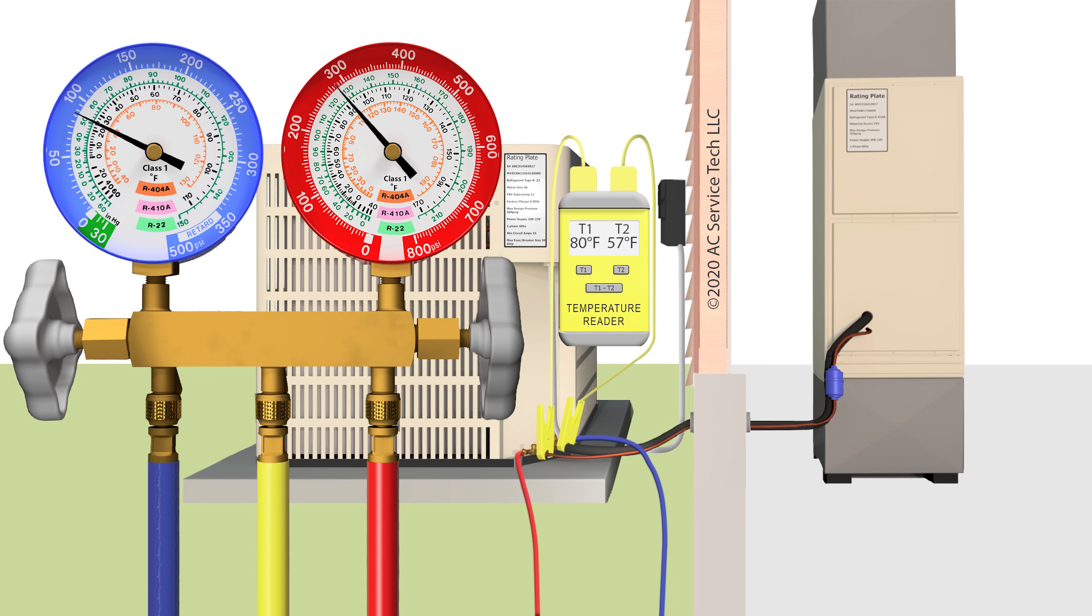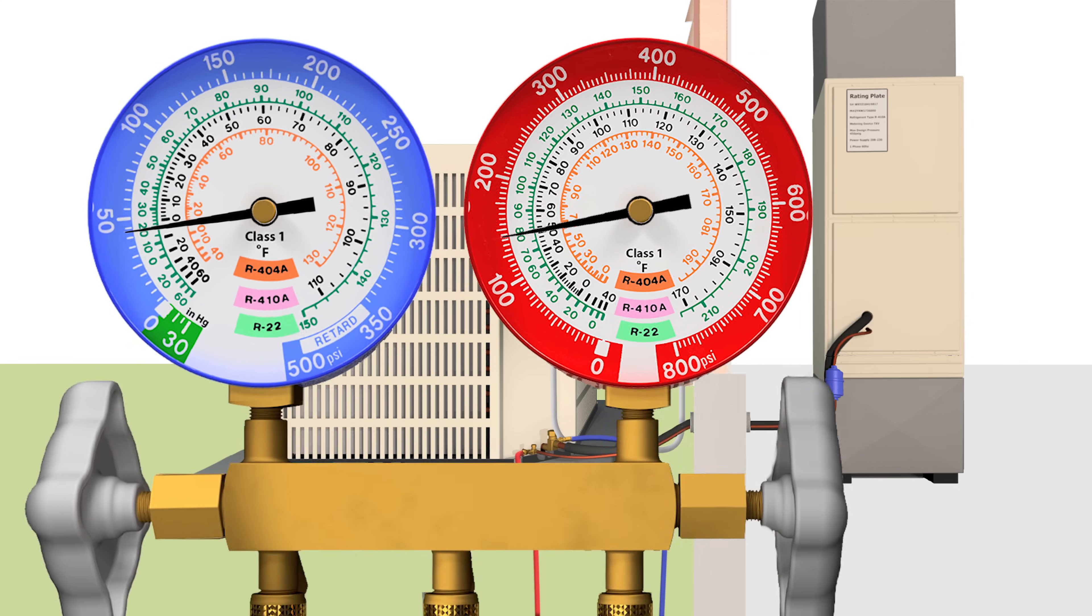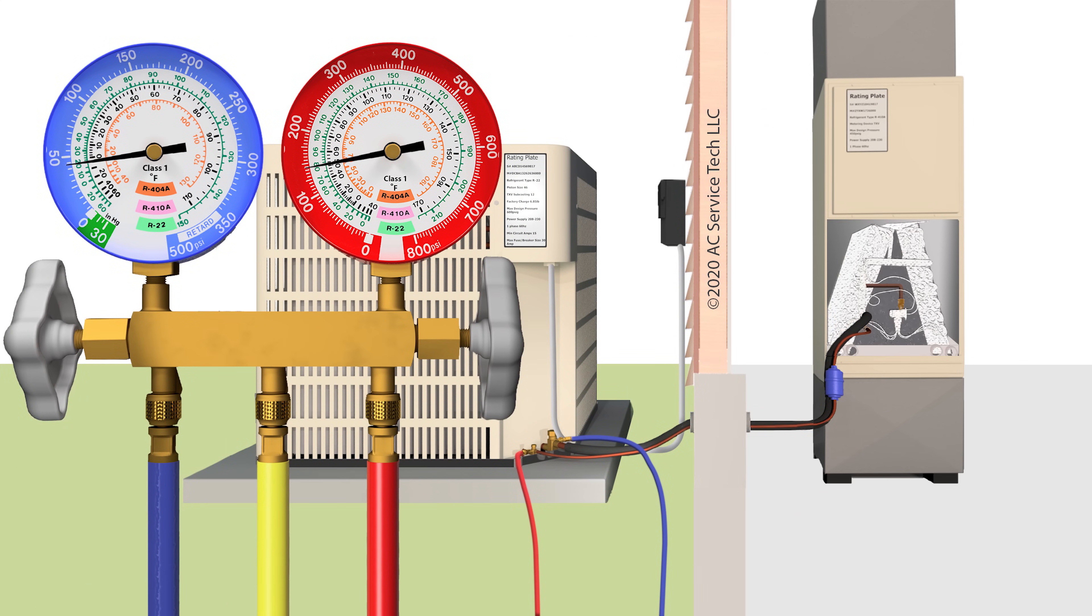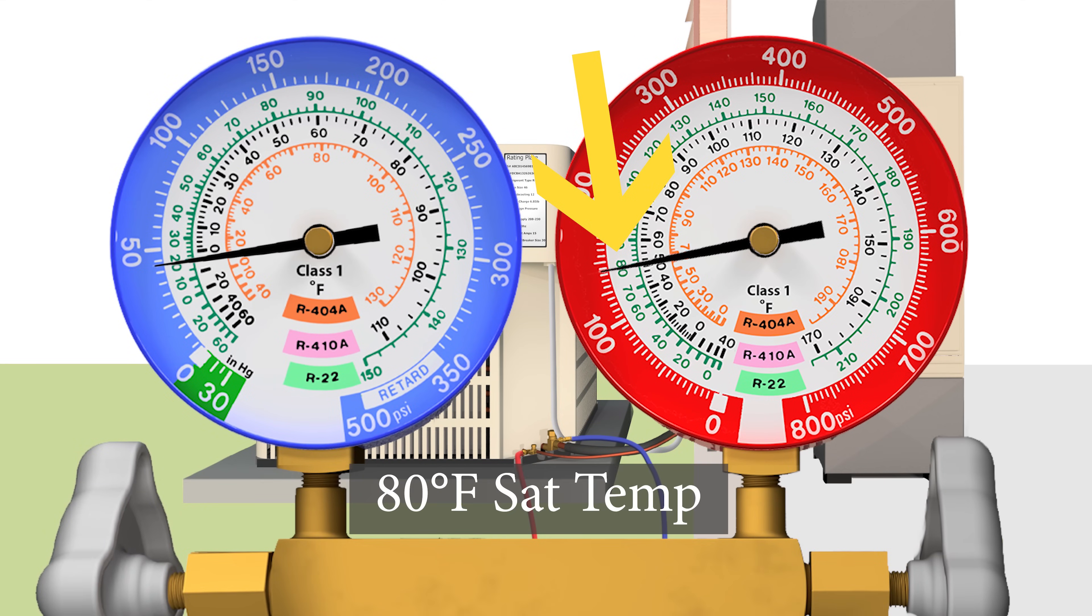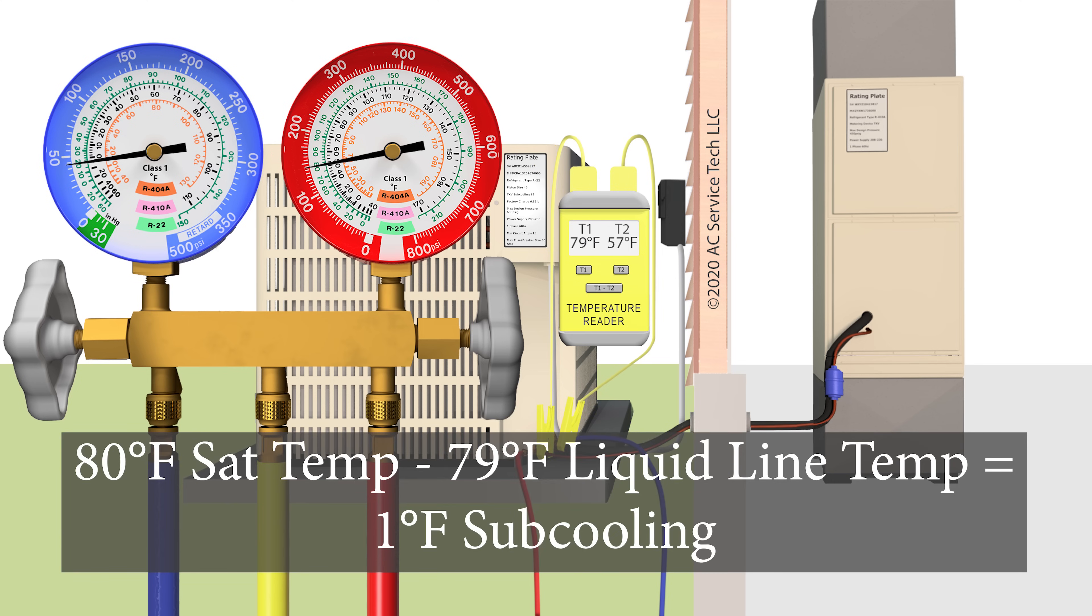Now, say we were checking an R22 system and our vapor saturated temperature was at 20 degrees and our liquid saturated temperature was at 80 degrees, and you see that we are measuring a pressure of 144 PSIG on this R22 system running with a frozen evaporator coil. We convert that to a saturated temperature on the red gauge of 80 degrees for R22. If we only read 79 degrees on our temp meter on the liquid line, then we know we only have one degree of subcooling. So that system is low on refrigerant for sure.